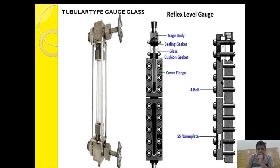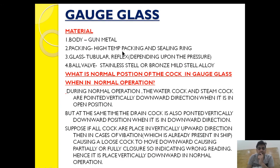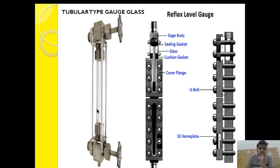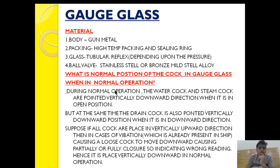The body of the gauge glass is mainly made up of gun metal. High temperature packing and sealing are used to ensure good sealing. The glass type depends on the type of gauge glass and the pressure and temperature — tubular glass for low pressure boilers and reflex or plate type for high pressure boilers. In the reflex type, the water level is shown in black and the steam space in white, whereas in the tubular type, the water level is shown as crystal clear white.